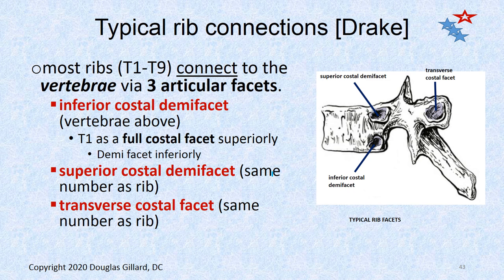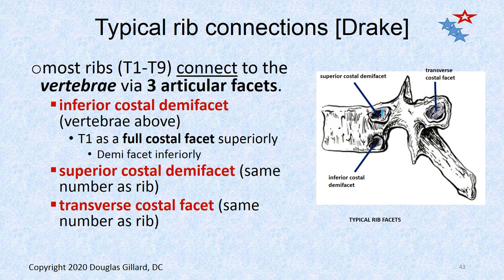There's also a transverse costal facet as well. Here is a classic picture of a superior costal demi-facet, inferior costal demi-facet, and a transverse costal facet. Not all vertebrae have these transverse costal facets. Most ribs T1 through T9 connect to the vertebrae at three articulation points via three facets: an inferior costal facet, a superior costal facet, and a transverse costal facet. T1 is a little strange — it has a very large facet because the rib head doesn't have to share with anybody, but it still has three on it.